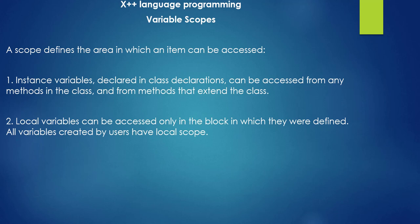So there are two things to learn: first, the instance variable, which is a class-level variable declared in a class declaration, accessible from all class methods or other class methods extending that parent class. Second, the local variable, which is only accessible within a certain block.